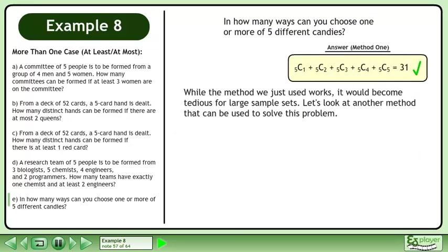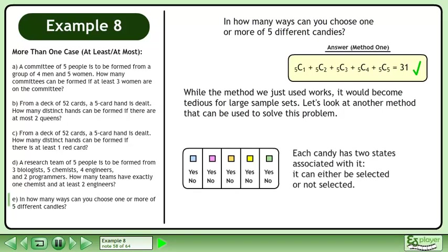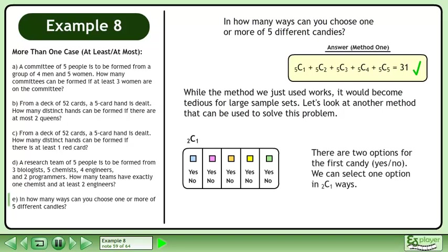While the method we just used works, it would become tedious for large sample sets. Let's look at another method that can be used to solve this problem. Each candy has two states: it can either be selected or not selected. There are two options for the first candy — yes or no — and we can select one option in 2 choose 1 ways.